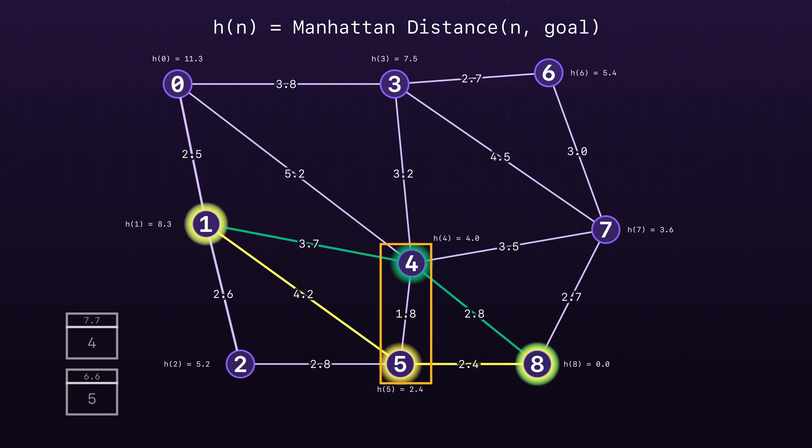If we look at the queue, node 4 ends up having a higher cost than node 5. The Manhattan distance ends up actually overestimating the cost it takes to get from node 4 to the goal.